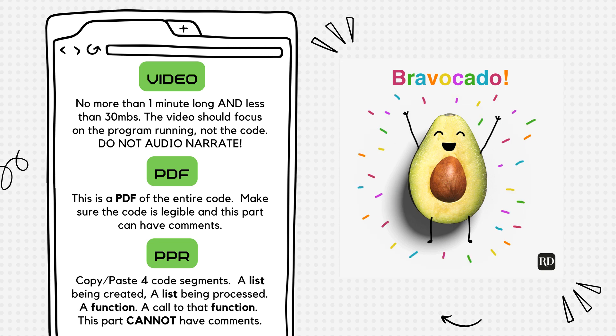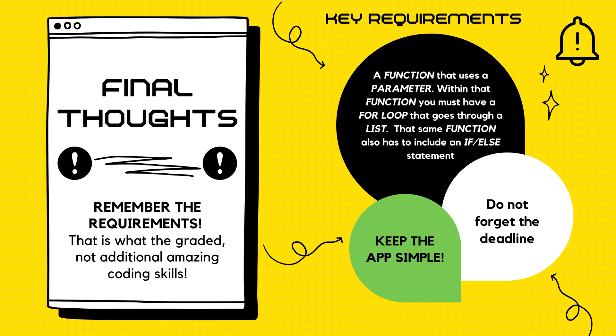And before the exam, that's all you have to submit. The next video will cover the written response on exam day. Please remember, keep it simple and stick to the important parts of the app. The two main parts are a list and a function. You need sequencing, which is a function — do not forget to include a parameter. You need iteration, which is processing a list through a for loop. And finally, you need selection, which is an if-else statement.